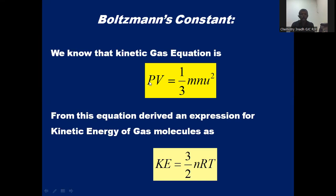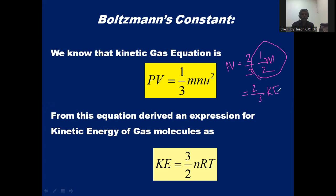From this expression, we have derived an expression for the kinetic energy of gas molecules. By multiplying: PV = 2/3 × (1/2 mn u²), where 1/2 mn u² corresponds to the kinetic energy, giving PV = 2/3 KE. And we know that for 1 mole of gas, PV = RT. Substituting, kinetic energy = 3/2 nRT, derived from the kinetic gas equation.